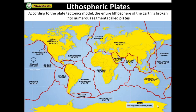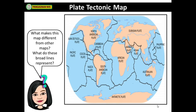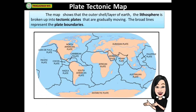According to the plate tectonics model, the entire lithosphere of the Earth is broken into numerous segments called plates. This map shows that the outer shell or layer of Earth, the lithosphere, is broken up into tectonic plates that are gradually moving. The broad lines on the map represent the plate boundaries.